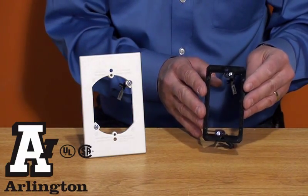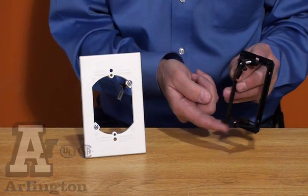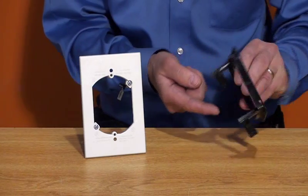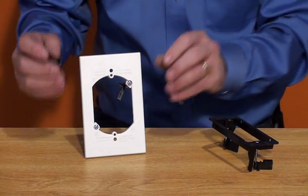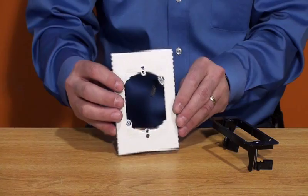If you think installing Class II wiring with Arlington's LV-1 low-voltage mounting bracket is fast, you should try the new LV-1RP mounting bracket.